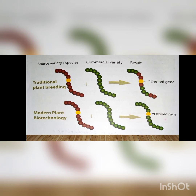Traditional plant breeding mein aap desired gene ko separate kar ke insert nahi kar sakte the. Lekin aaj kal ki modern plant biotechnology mein, usi diagram ko dekhen — green sara color hai aur sirf ek yellow circle hai jo hamara desired gene tha. Doosre dark purple ya red circles nahi hain. Modern biotechnology ke zariye jo gene aap chahte hain sirf wahi agle variety mein milta hai — us gene ko isolate kar ke nayi species mein introduce karwa dete hain.